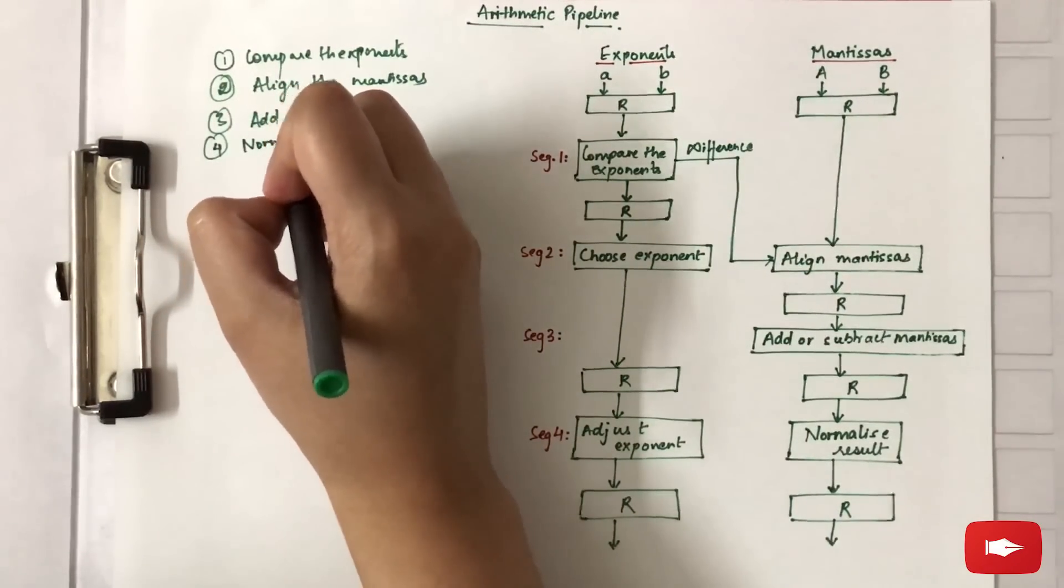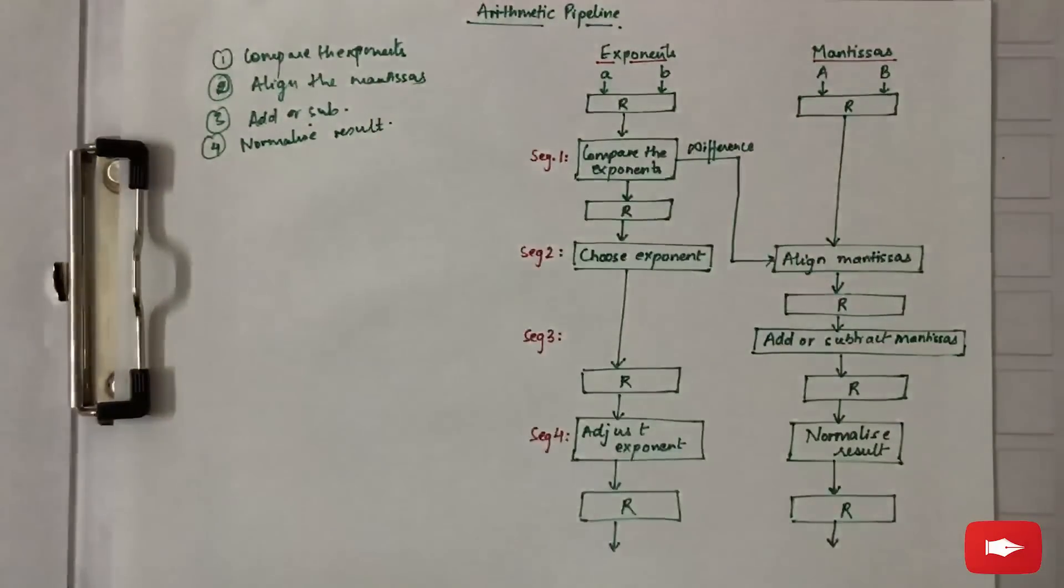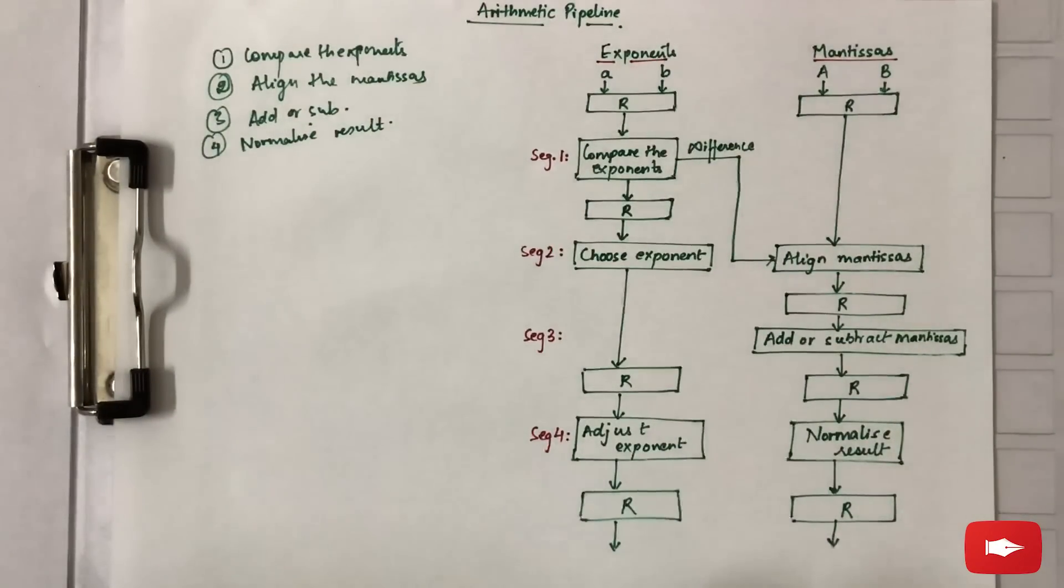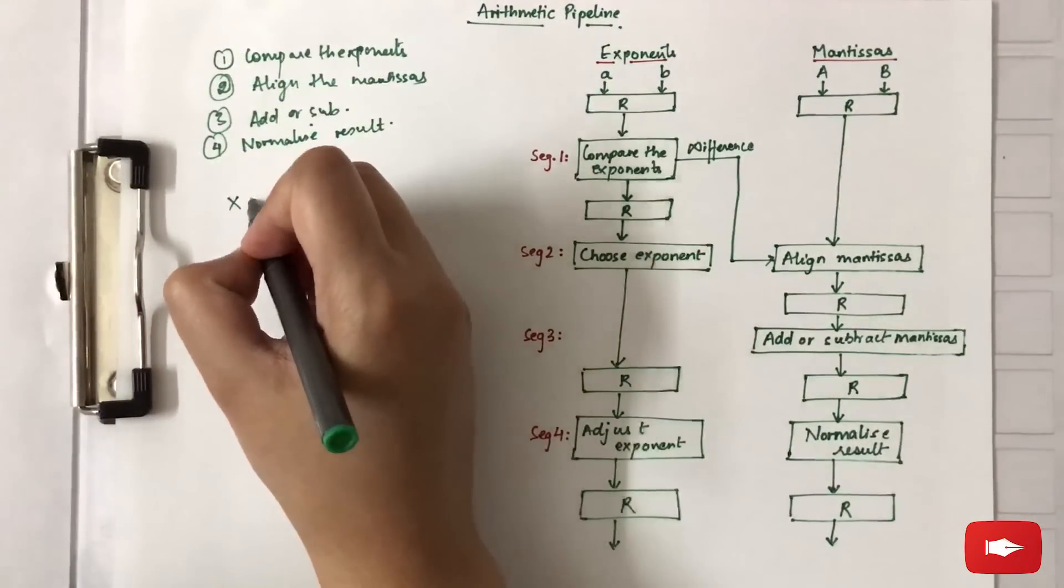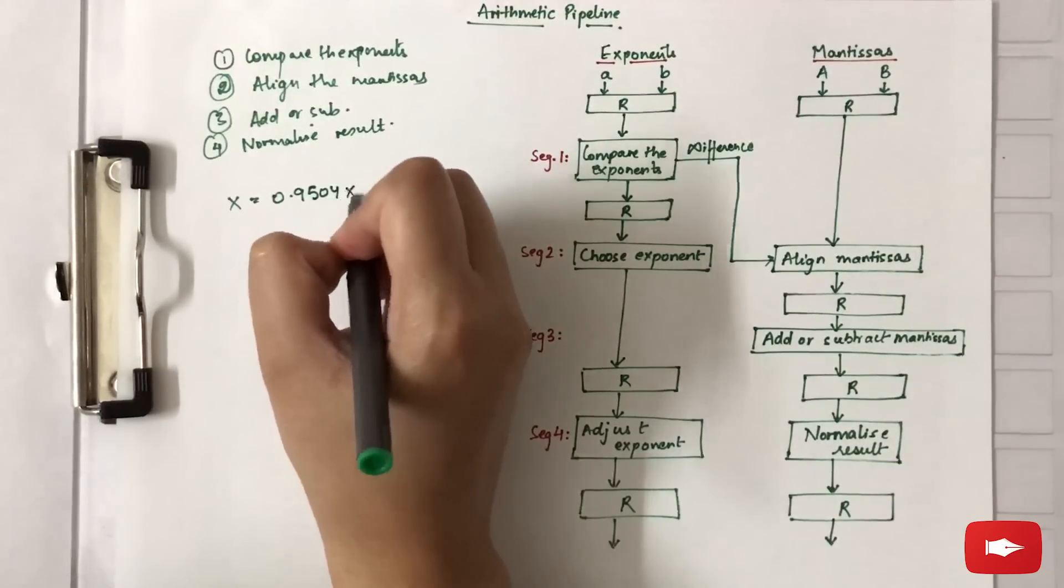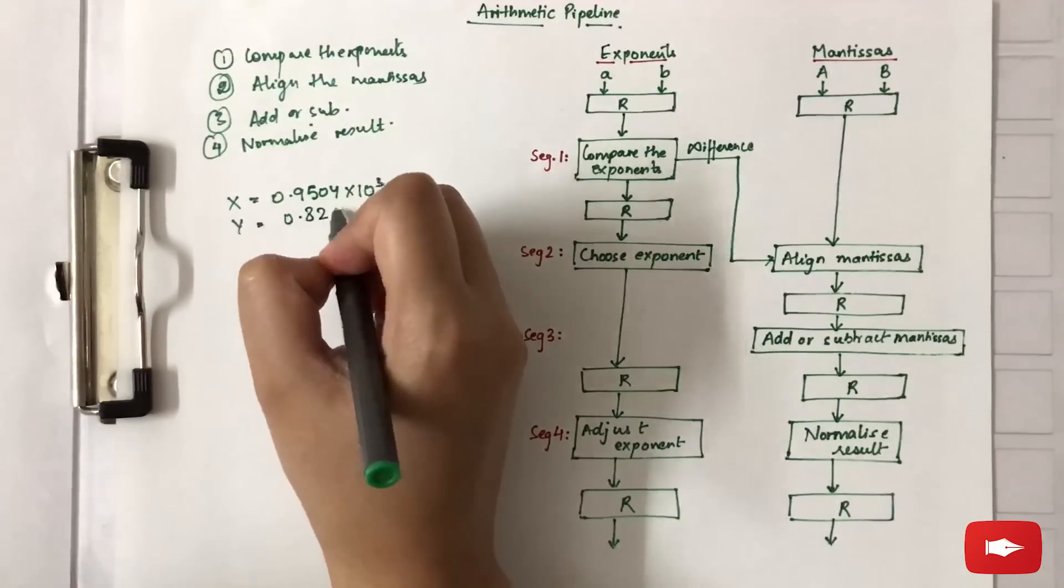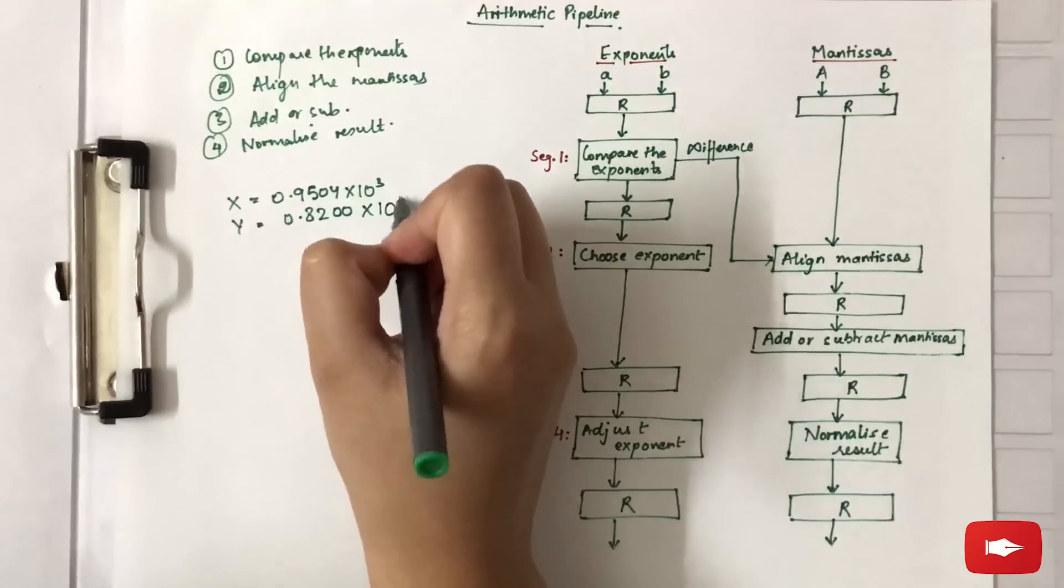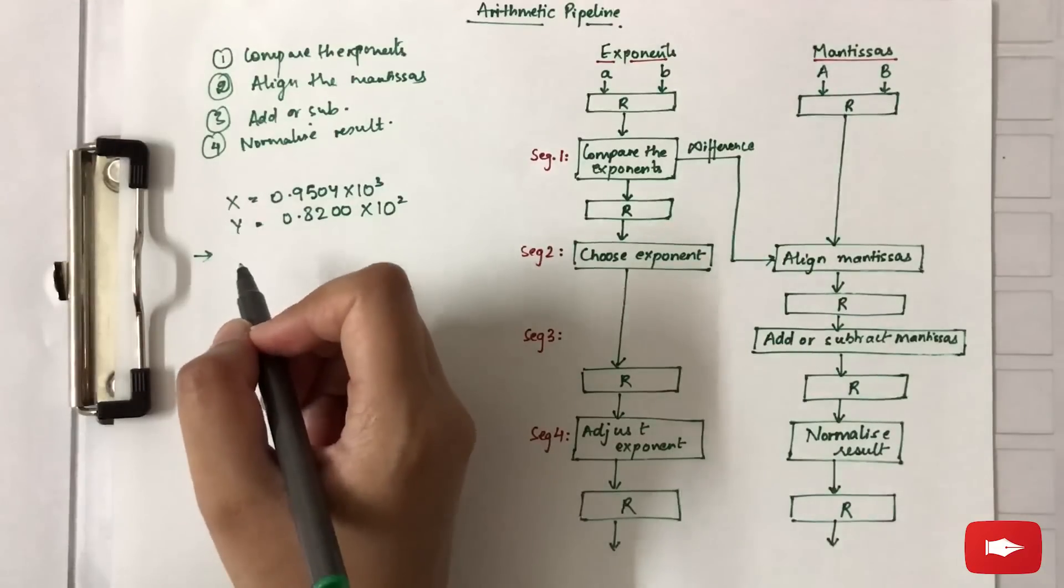Let's illustrate this by taking two values. We take two numbers: X = 0.9504 × 10³ and Y = 0.8200 × 10². If we need to add or subtract these two numbers, what we will do is...